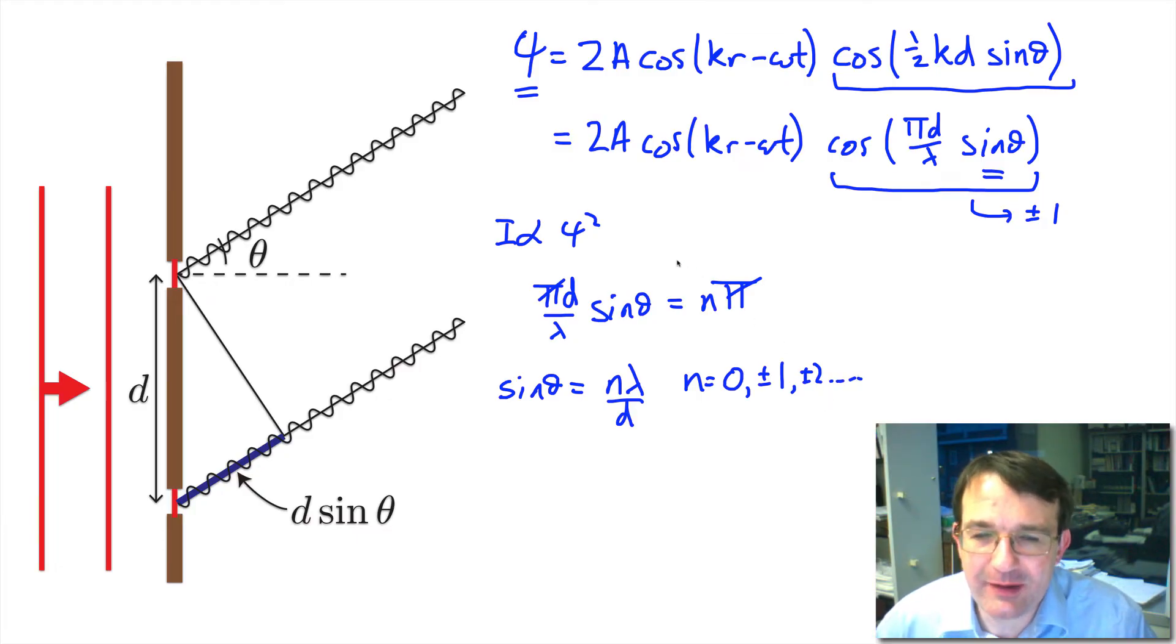Now the other thing to remember before we do the plot is that here the amplitude is equal to the cosine of a function of sine theta. So we're no longer going to have this central maximum, we're going to have oscillations because we have this cosine term. The intensity, because it's the amplitude squared, is going to be proportional to cosine squared.